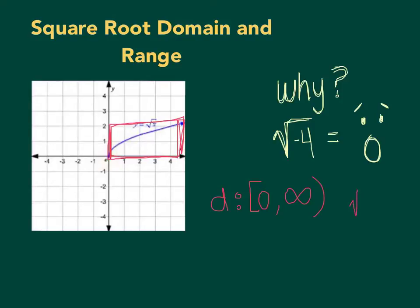Reason being, square root of 0 equals 0. It's why when x is 0, y is also 0.